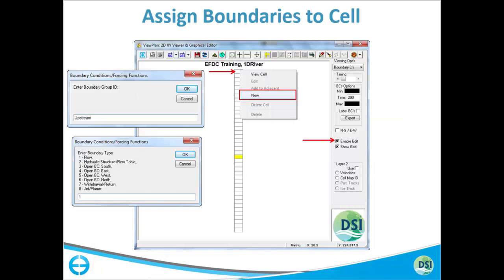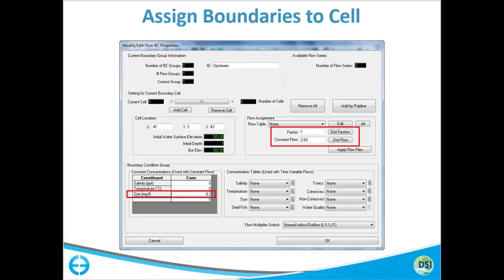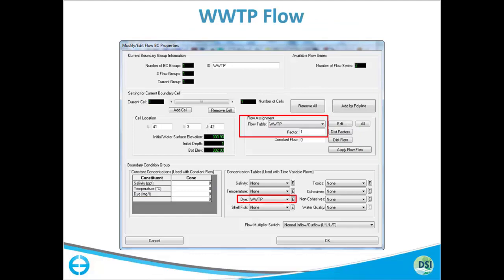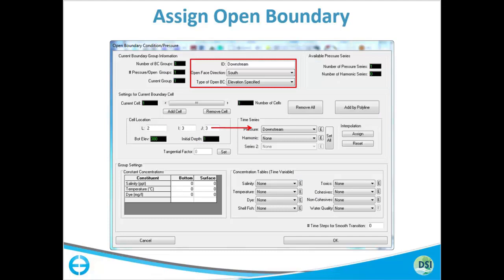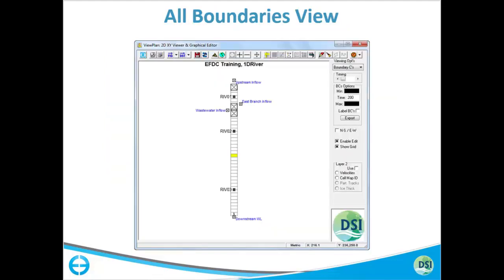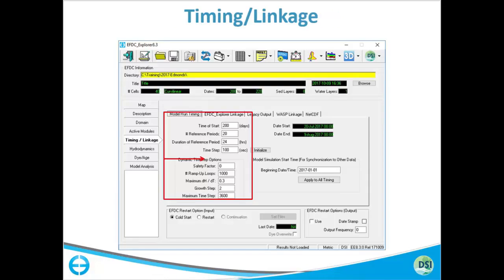After importing all the data, it's time to assign which cell is upstream, which is downstream, which is the wastewater treatment plant, etc. We will show you how to link all of that cell information and data together in the 'Flow Boundary Condition Properties Group' window and assign flows and dye concentrations. You will notice the form for open boundary and flow boundary are different. After you have assigned boundary conditions, the checkbox with a larger X in the middle represents flow boundaries, and the 'S' at the bottom means the flow is going through the open boundary in the south direction.